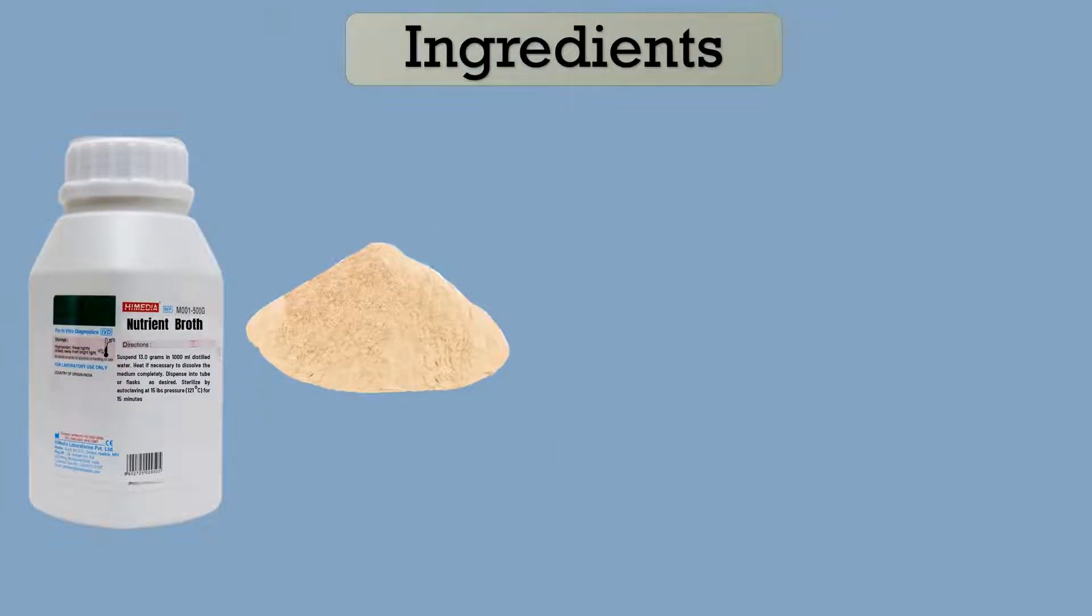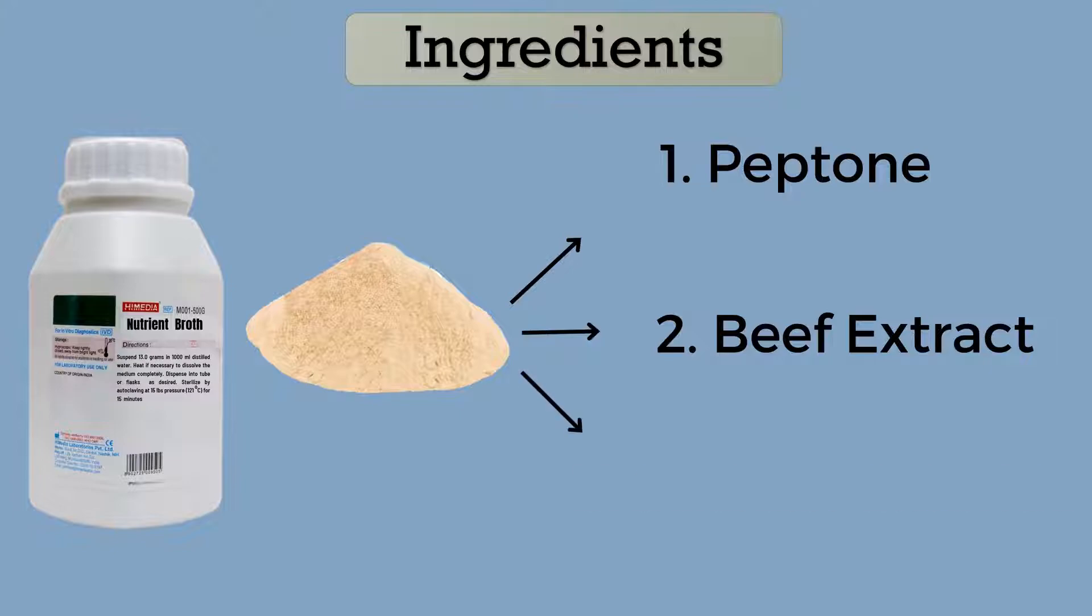This is commercially available nutrient broth bottle from Hi Media. This bottle contains nutrient broth powder. This powder is slightly yellowish in color. This nutrient broth powder is a mixture of three ingredients: peptone, beef extract and sodium chloride.